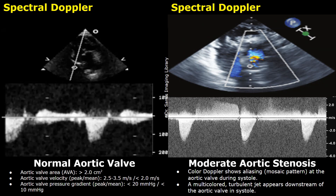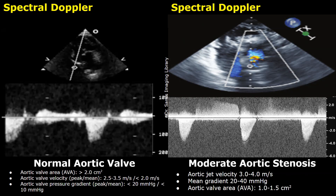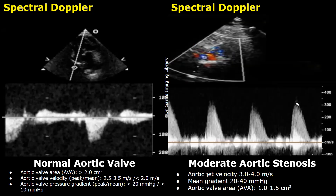In moderate aortic stenosis, you may find color mixing or a mosaic pattern at the aortic valve during systole, and a multicolored turbulent jet appears downstream of the aortic valve. On spectral Doppler, the aortic jet velocity is between 3 and 4 m/s. The mean gradient is 20 to 40 mmHg, and the aortic valve area is 1 to 1.5 cm². Here is another example of moderate aortic valve stenosis where the peak velocity on spectral Doppler is just above 3 m/s, confirming moderate stenosis.